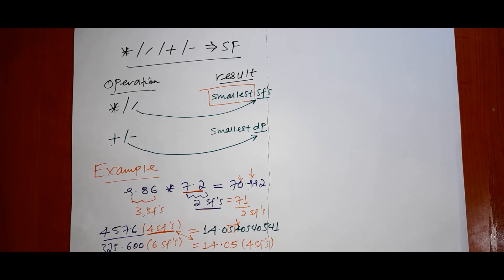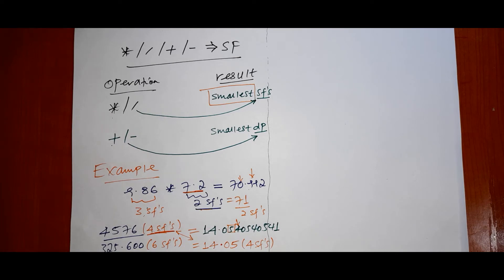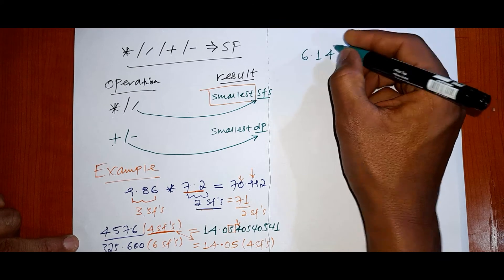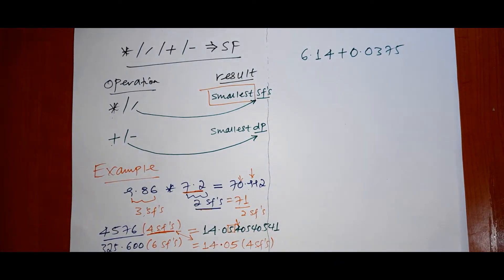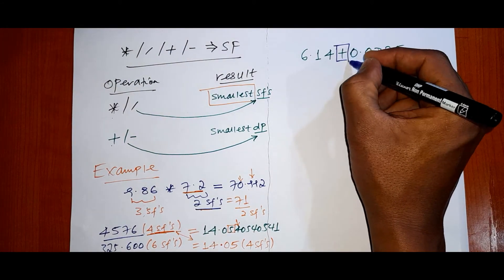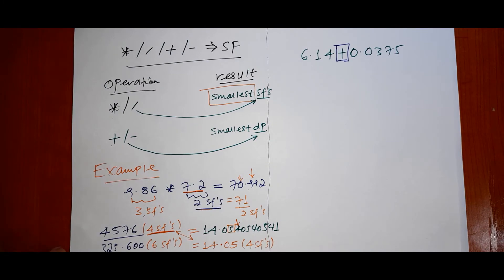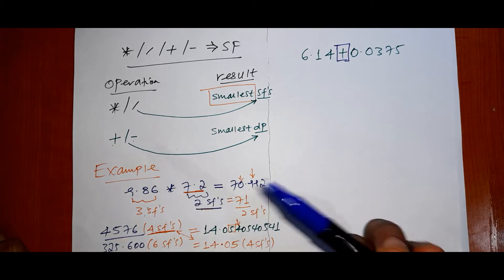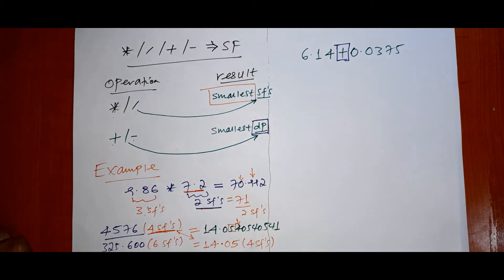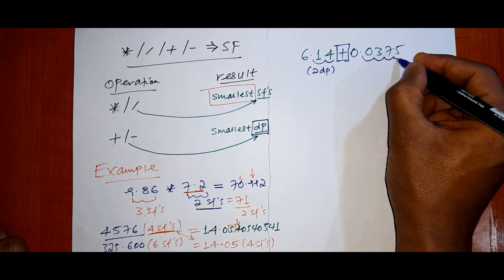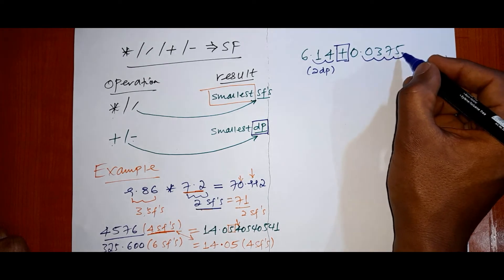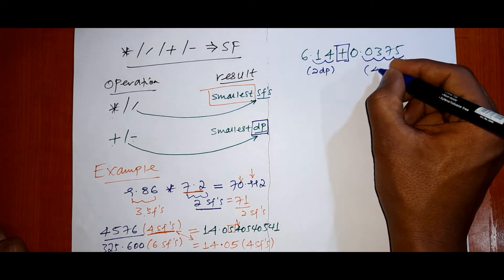Now, how to add or subtract two numbers. Take 6.14 plus 0.0375. This is an addition problem. For addition and subtraction, you must consider the decimal places. Count the decimal places for each number.